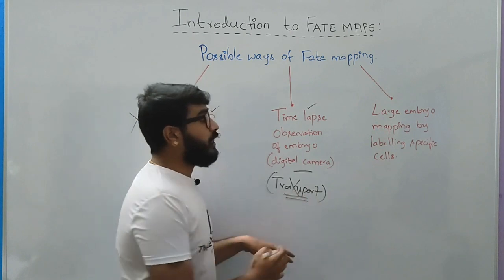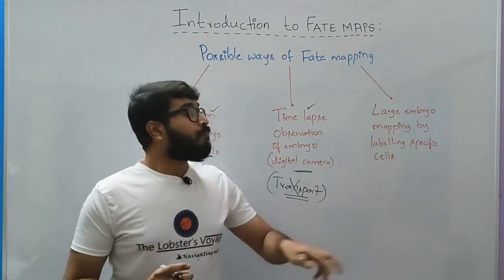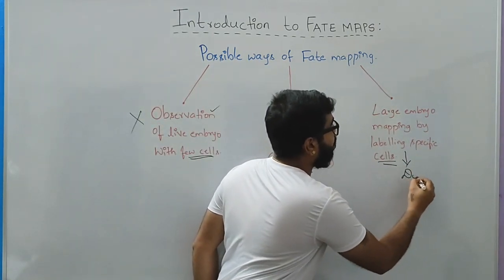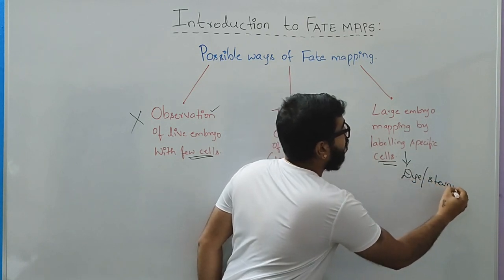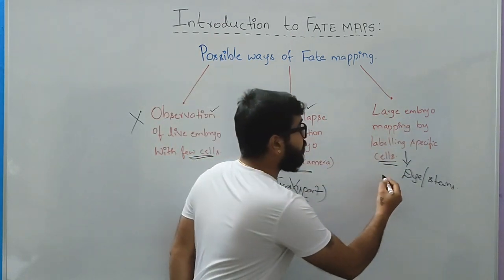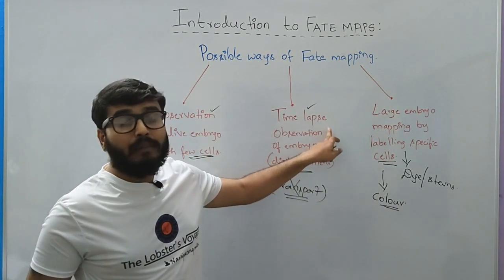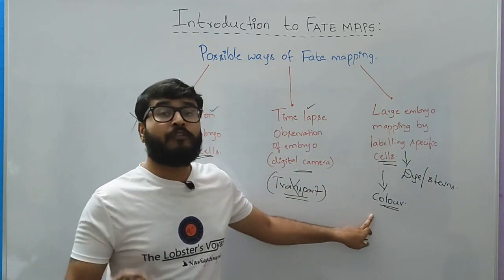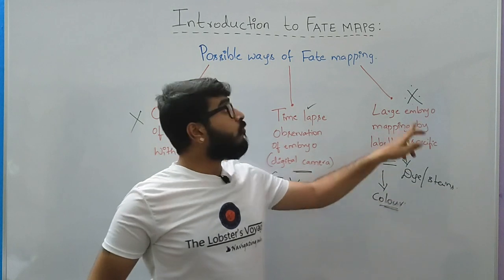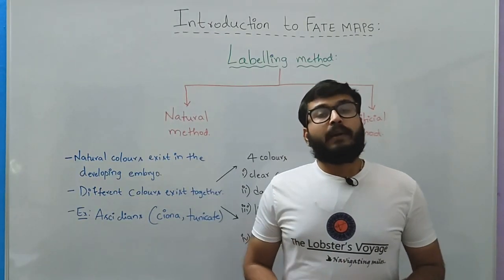The third and most important technique under fate map construction is where larger embryos are mapped with specific labels using dyes or stains. Selected cells are dyed or stained, and this staining gives color. This color can easily be tracked with the help of time-lapse mode, a camera, or a microscope. The use of dye or stain for the process of fate mapping is an important step in the construction of any fate map.